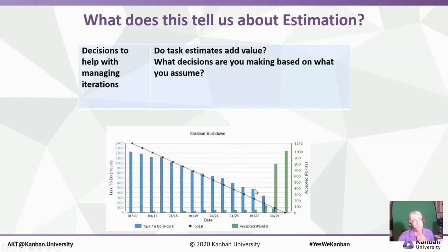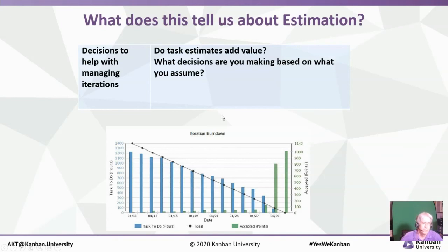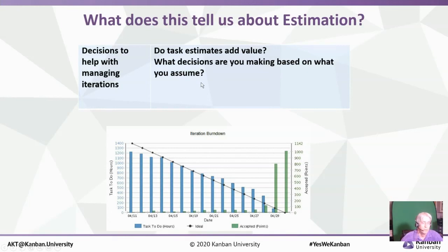What does it tell us about decisions helping with iterations? My view is that given story points don't help us much, task estimations aren't adding much value either — because it's solving the wrong problem. It's not solving the high-level business decision question. In a Kanban world, we don't usually have iterations and we're not trying to meet some artificial deadline. So the value-add of task estimations is quite low. Once we've decided we're going to do a story, we're going to do it — why bother estimating once you've already made that decision?